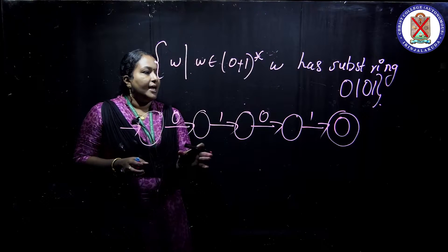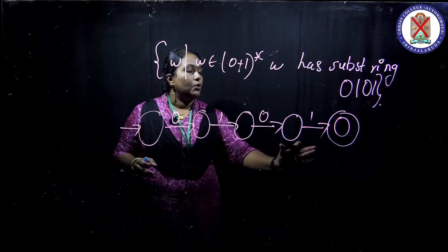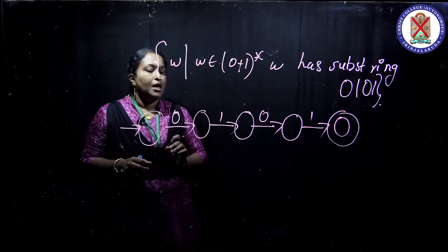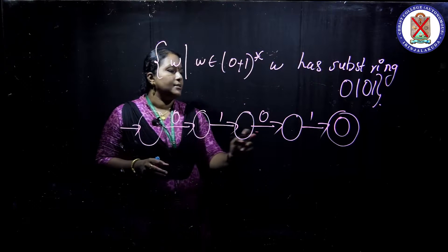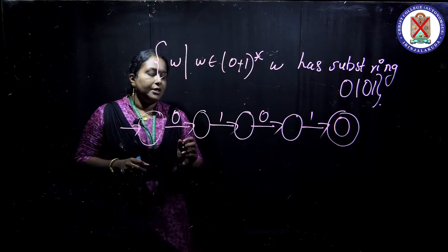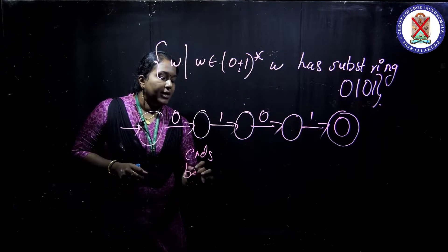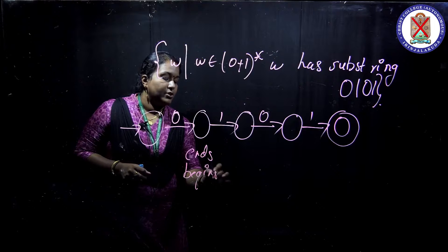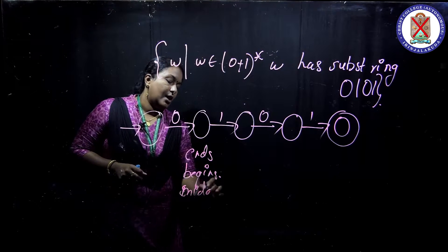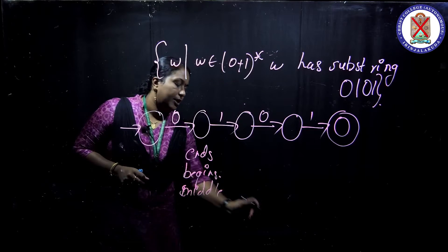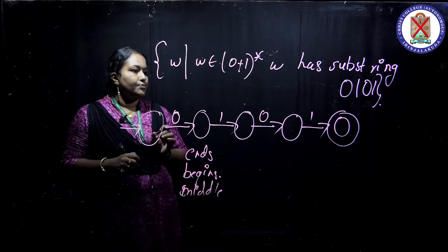First, we take care of how the string will look with the begins-with condition. The string is beginning with 0,1,0,1. So what conditions do we have to check? We have to check the ends-with condition, the begins-with condition, and also the middle condition. First, look into the ends-with condition.